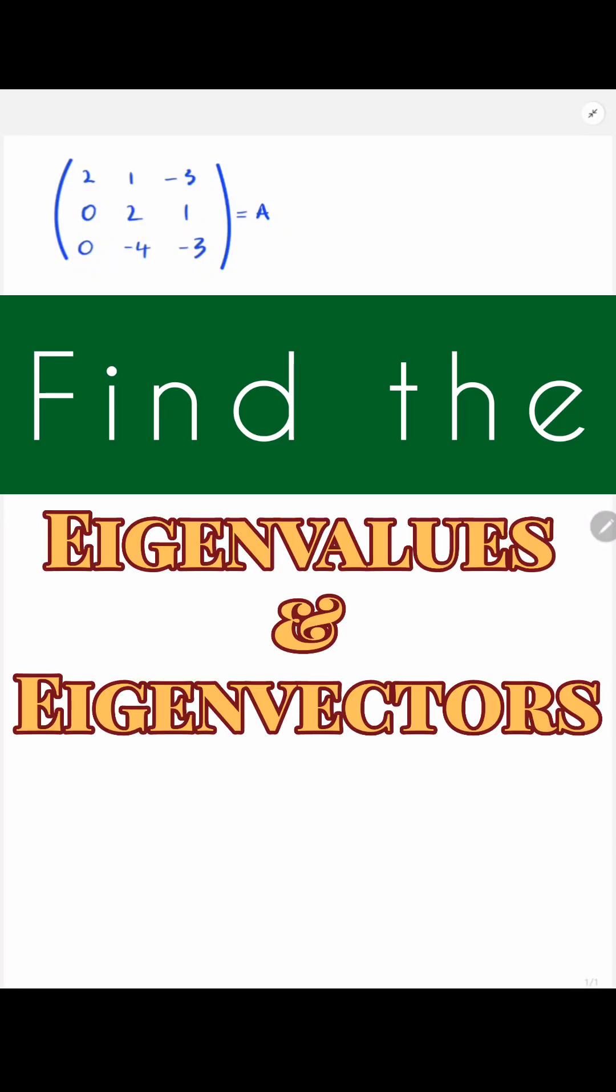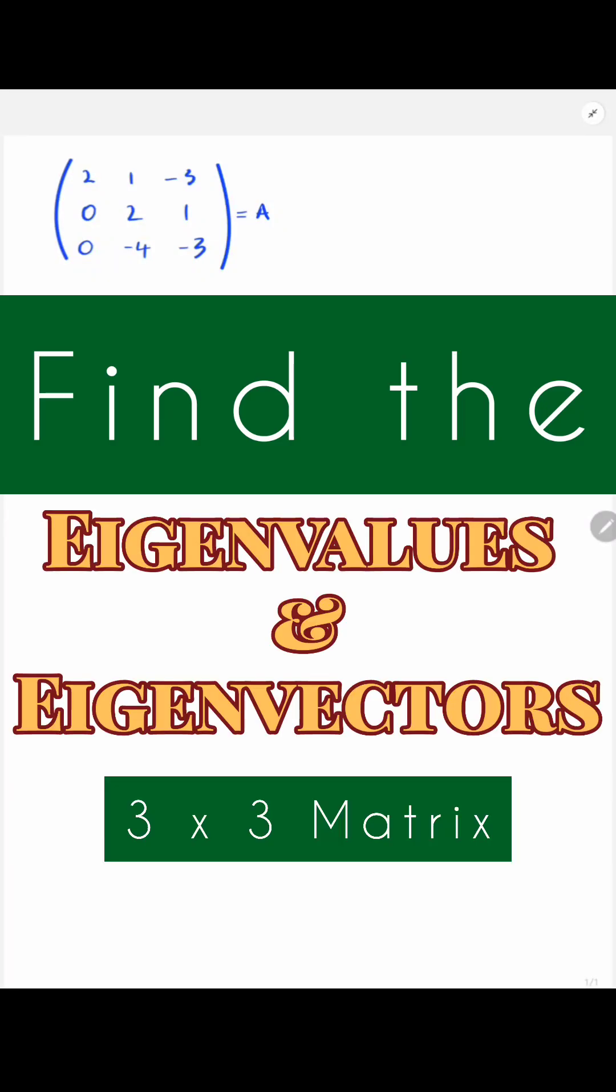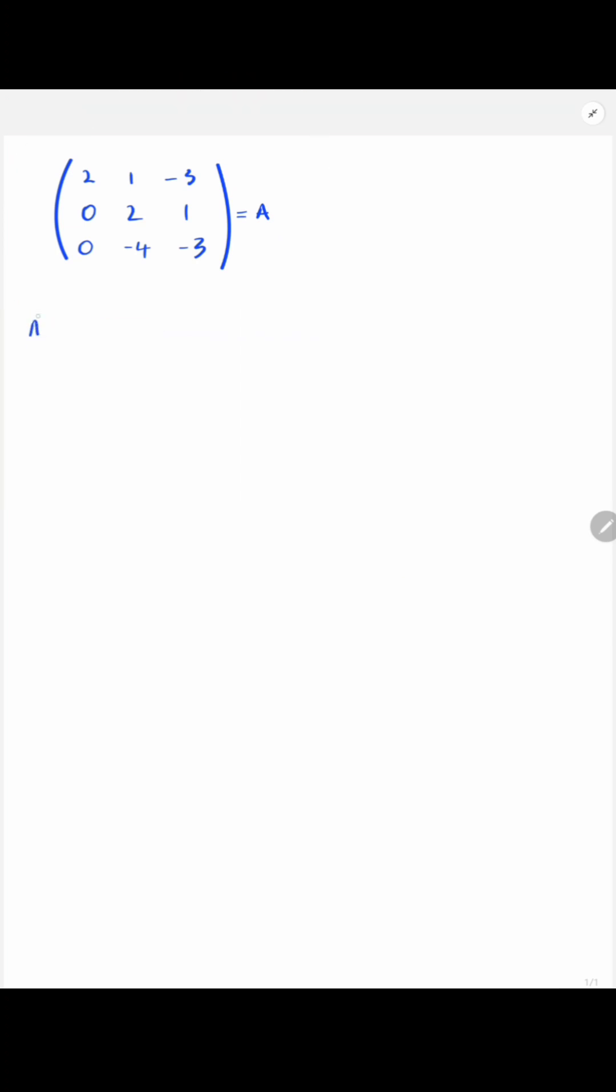The question asks us to find the eigenvalues and correspondent eigenvectors of the matrix A. We do that as typical by our definition. We need to find the determinant of this. So if we do a subtraction of lambda I, we end up with...